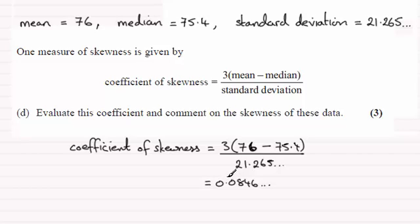Now when it comes to skewness coefficient, if this is zero then there is no skewness - the distribution would be symmetrical. If it's a positive number then it's going to be positive skew. If it's a negative number, negative skew. Now clearly it's a positive number, but it's very close to zero.